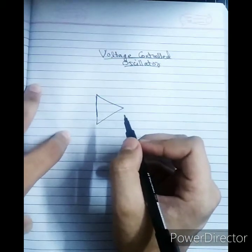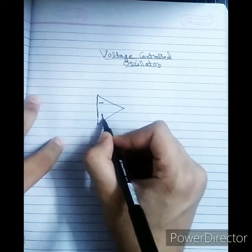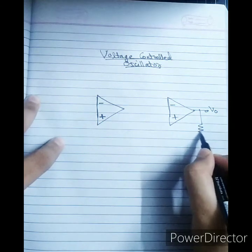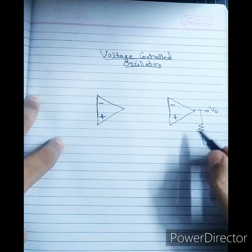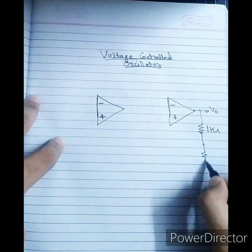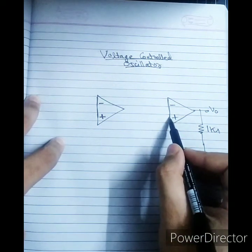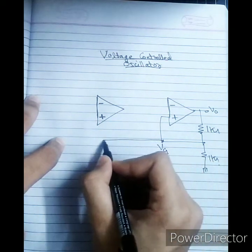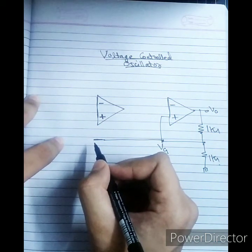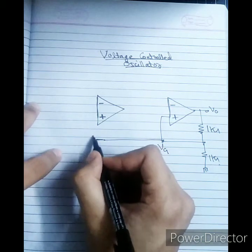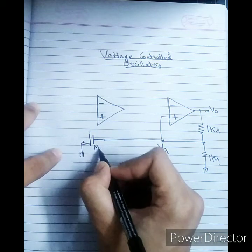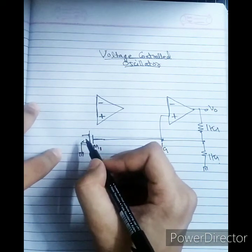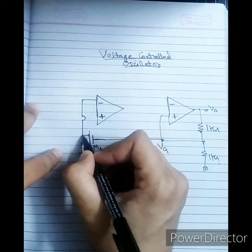First we will design the circuit and then understand its working. This is op-amp number 1 and this is op-amp number 2. This is the output, and I am taking the feedback and connecting it to the positive terminal. The resistors are 1 kilo ohm each. This potential I will mark as VG, and VG is connected to the gate of the MOSFET M1. The drain of M1 is connected to the negative terminal of op-amp 1.